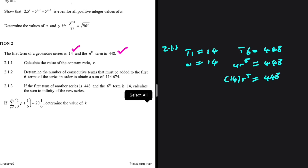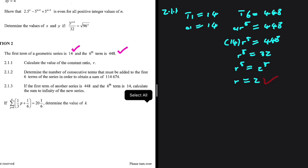Now we need to divide both sides by 14. If we do that, we get R to the power of 5 equals 32. So R to the power of 5 equals 2 to the power of 5, and it should be easy to see that R equals 2. This is our common ratio of the geometric series.